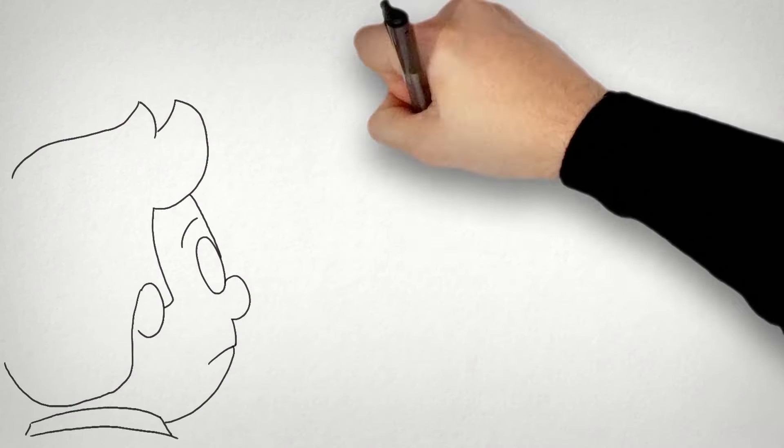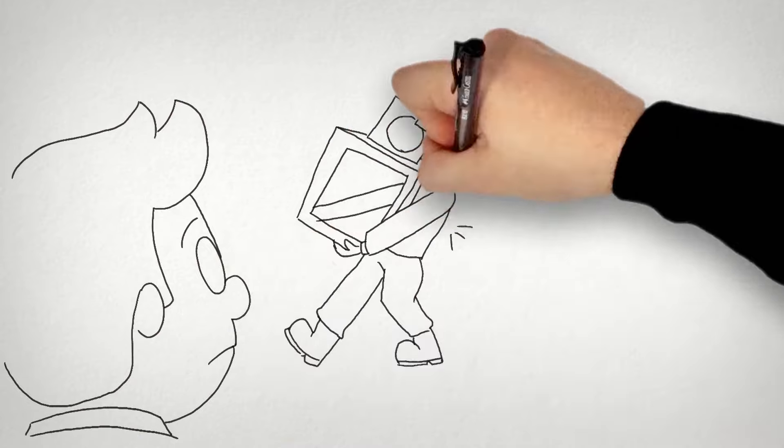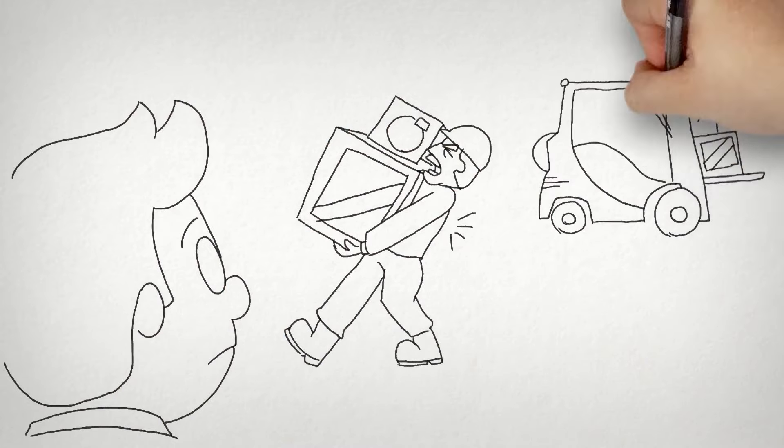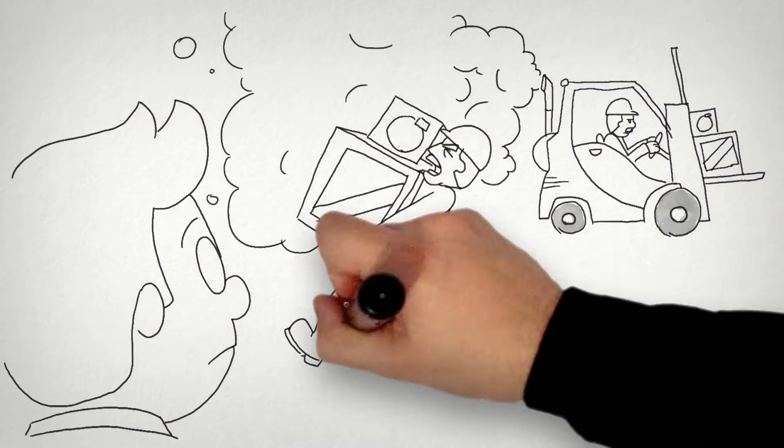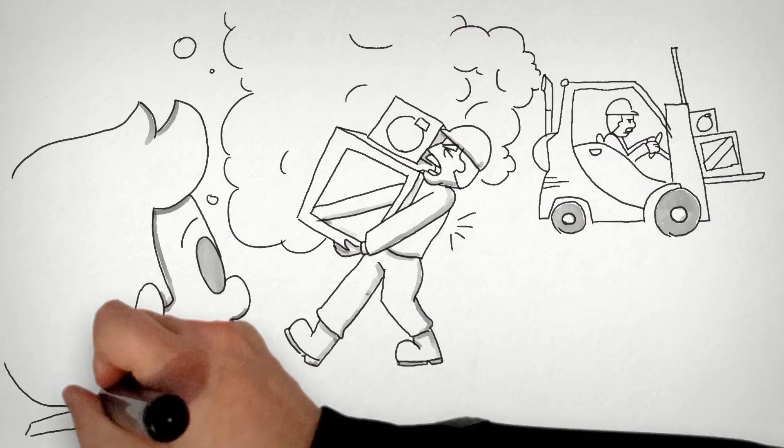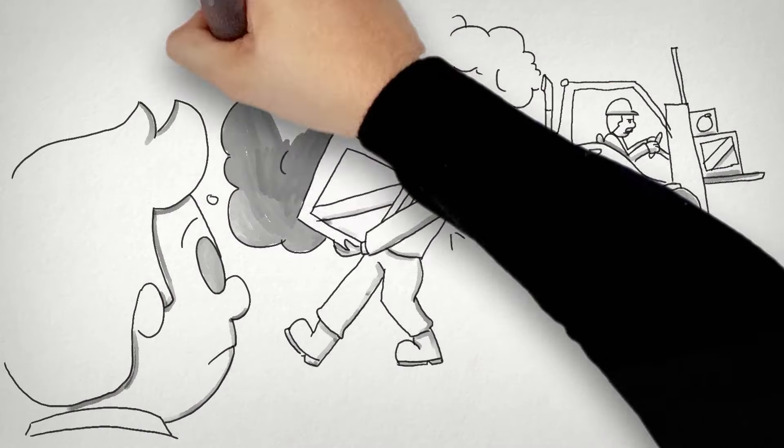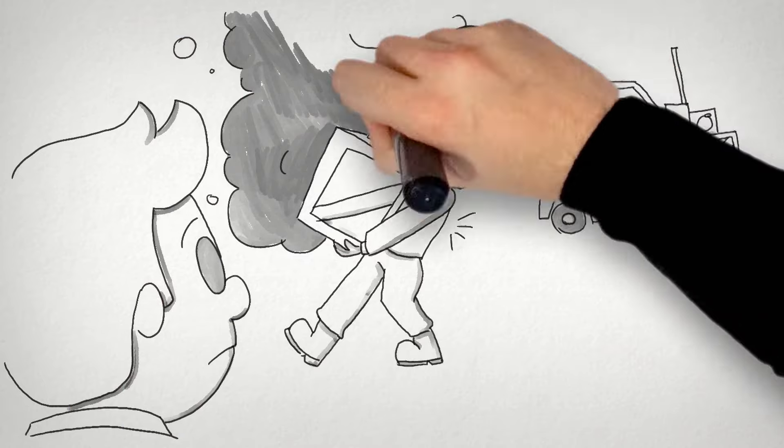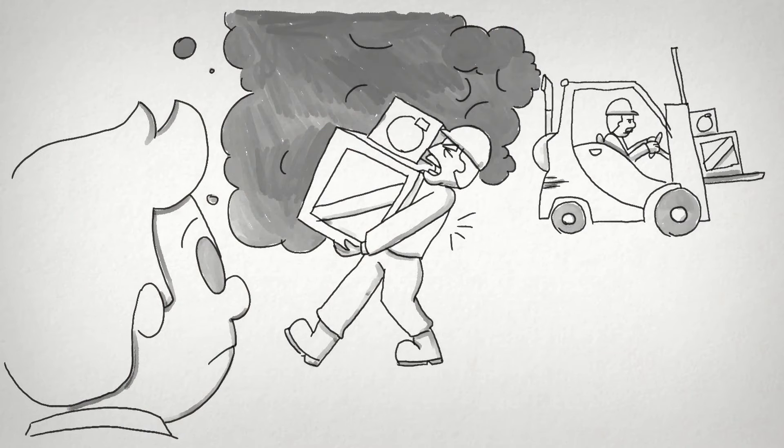We want George to understand how the decisions we make about materials and technologies, for example, impact on people now and into the future. We want George to think about how technologies can be used to create a future in which George would prefer to live.